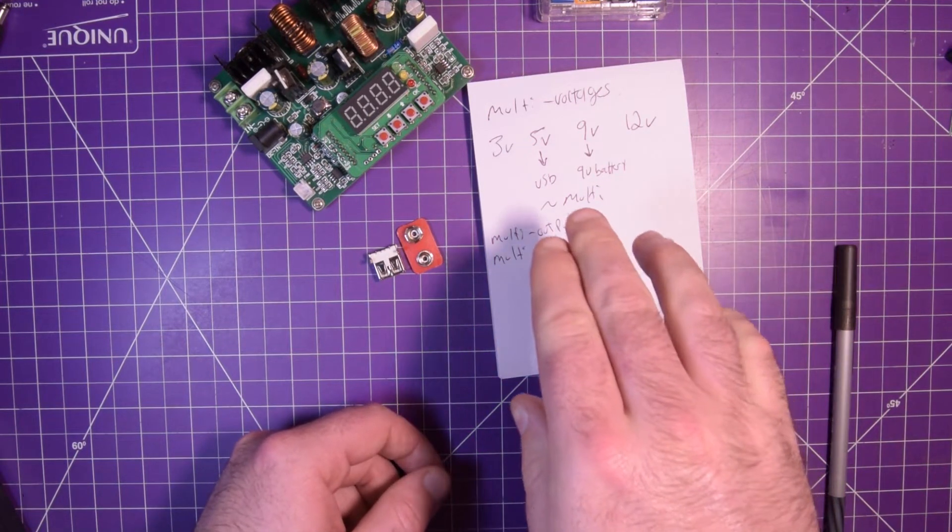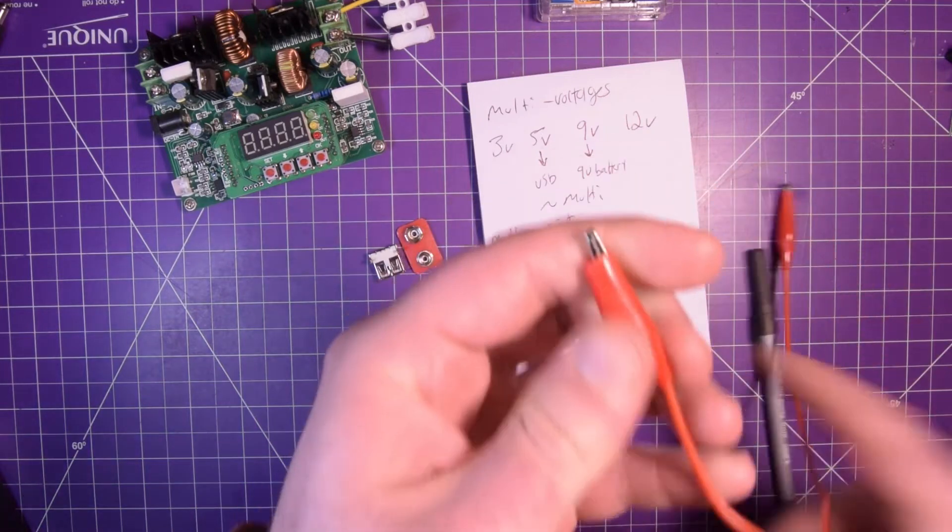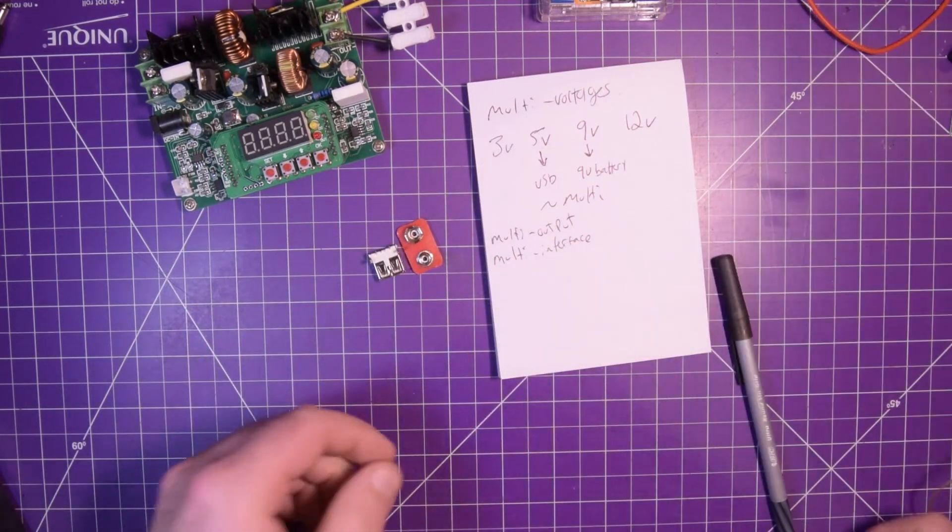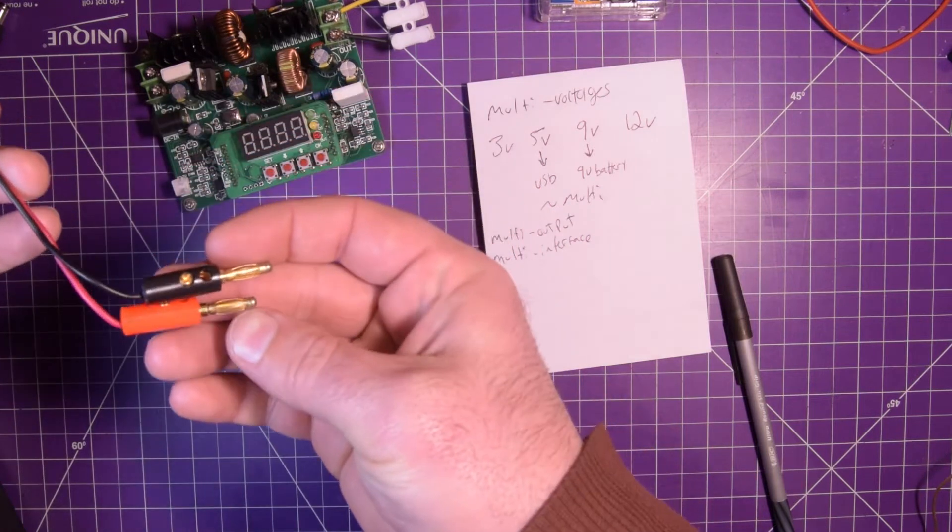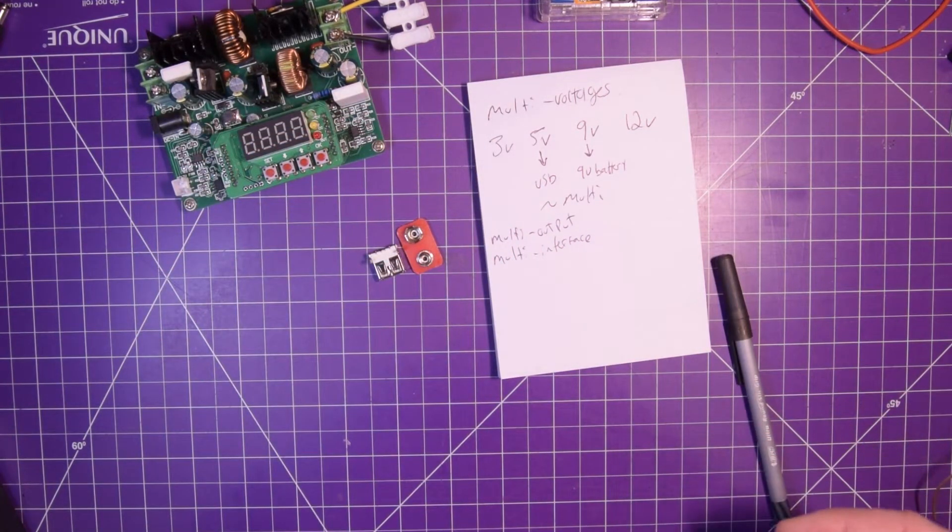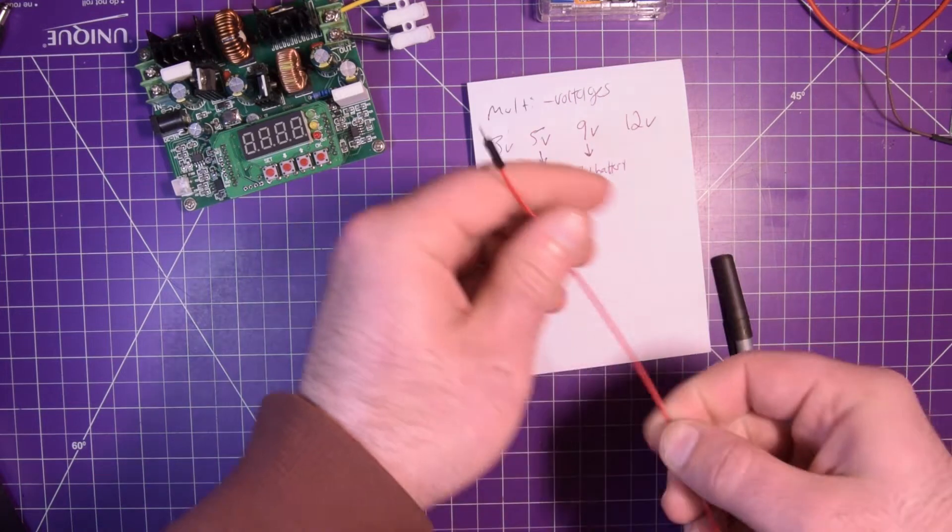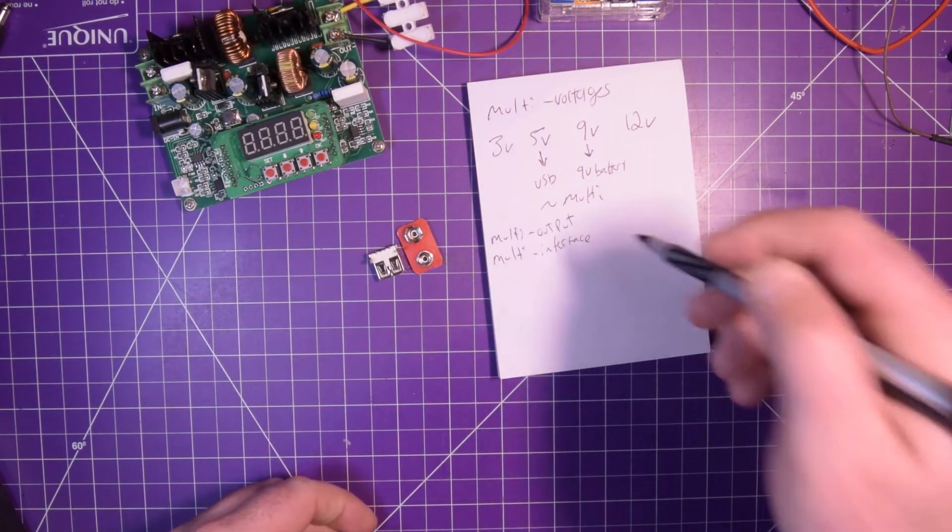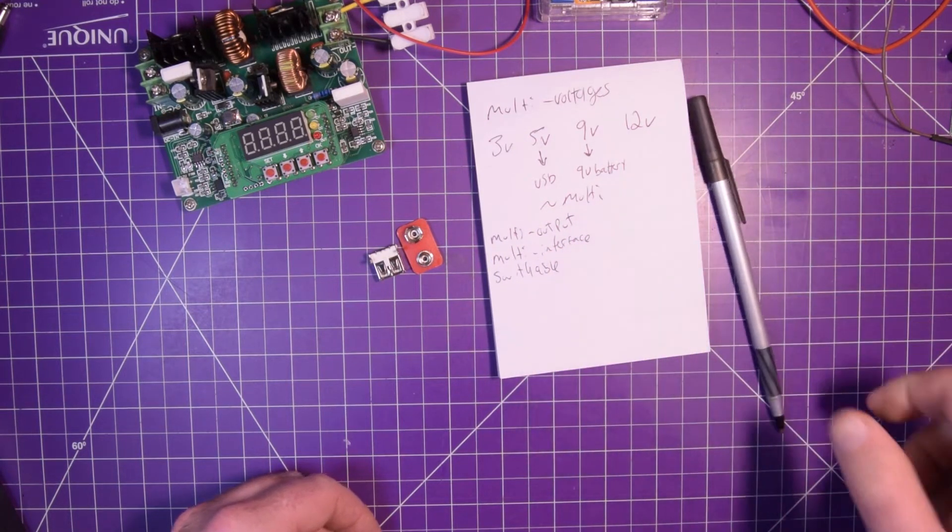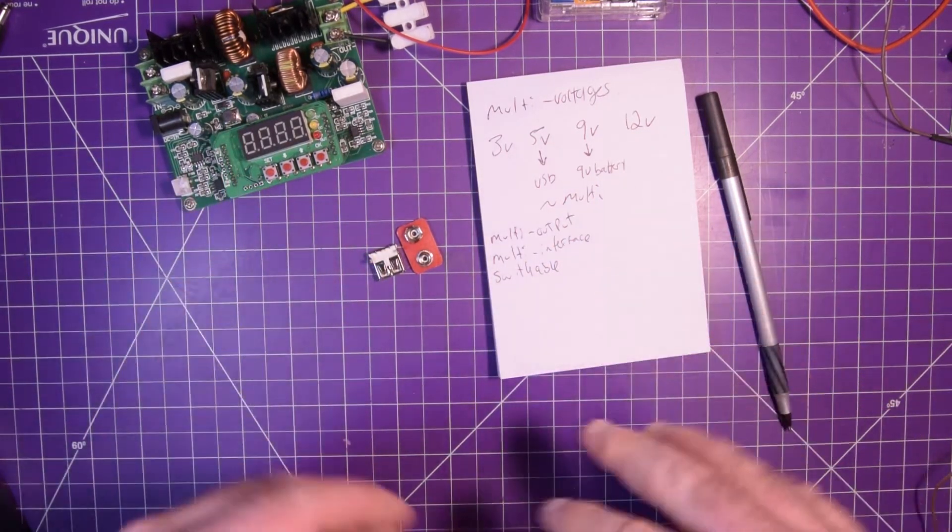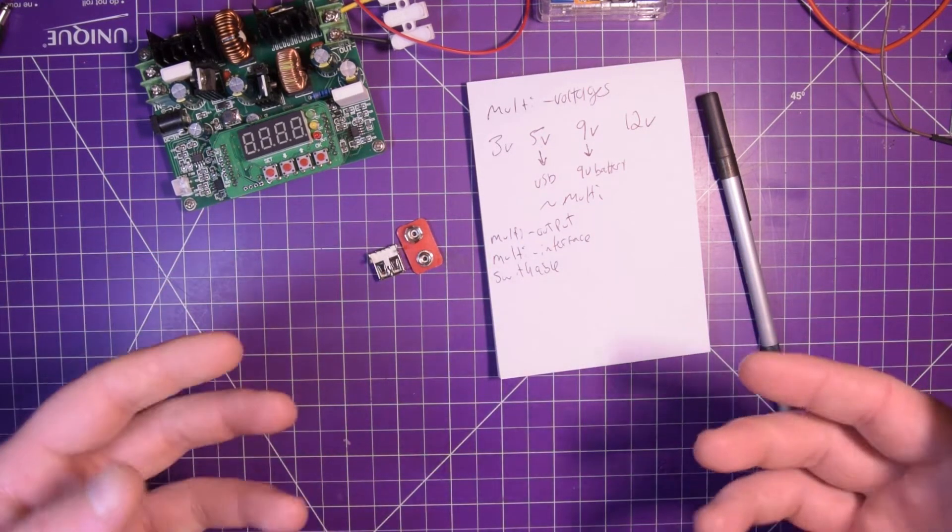Multi-interface - I want this to be able to use these kinds of terminals so I can put flying leads on. I should have a way to clip alligator clips onto them. I should have a way to use 4mm banana plugs. And breadboard - I should be able to use these breadboard leads. So multi-output, multi-interface, and switchable.